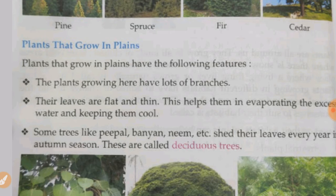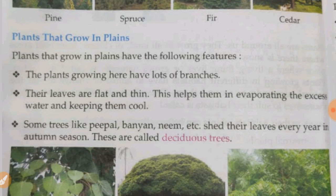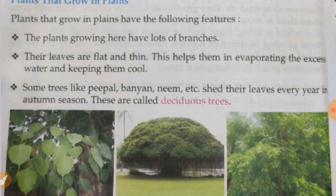Plants that grow in plains have the following features. The plants growing here have lots of branches. Their leaves are flat and thin, which helps them in evaporating excess water and keeping them cool. Some trees like peepal, banyan, and neem shed their leaves every year in autumn season. These are called deciduous trees.